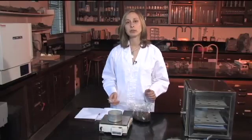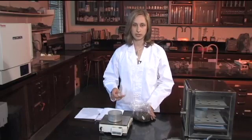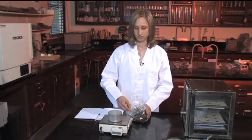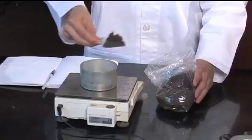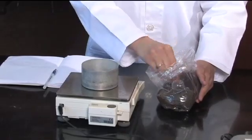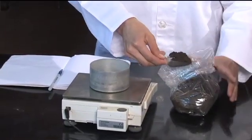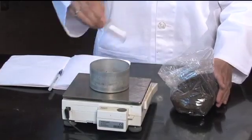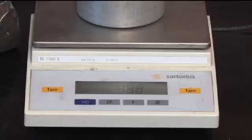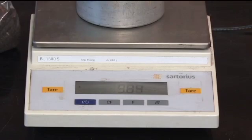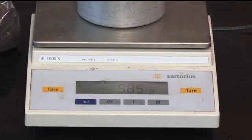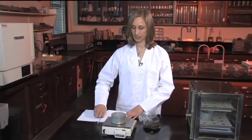Then weigh out about 2 to 10 grams of your moist sample and record the weight of the tin plus your sample. Then the samples go in the oven at 105 degrees Celsius.